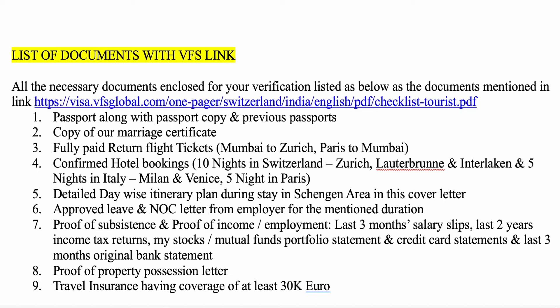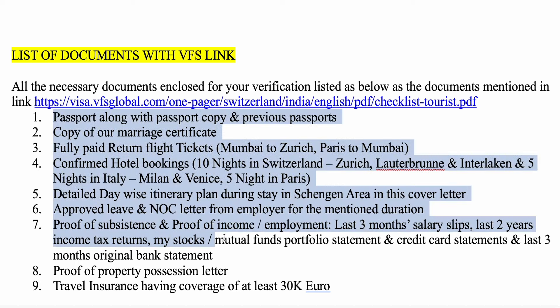The sixth section is the document list. You have to write which documents you are submitting and include the VFS link, because VFS is the official agency through which you submit your application. That's why I am submitting all the documents as listed. If you want to know which documents are required, you can look at my Schengen visa guide video where I have given the entire list and explained all the documents.